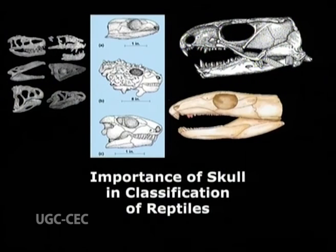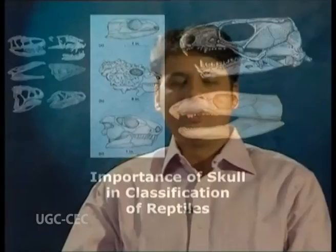Importance of Skull in the Classification of Reptiles. We have studied how reptiles are classified, and we got the idea that many reptilians are either extinct or became endangered. According to the type of skull, on the basis of the arrangement of the temporal openings, reptiles are classified into four groups. This classification is in some ways artificial, but it indicates the main lines of evolution within the class.